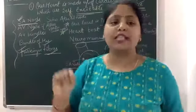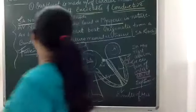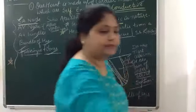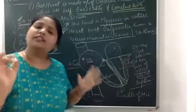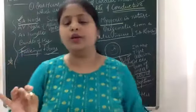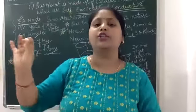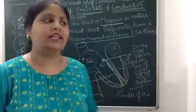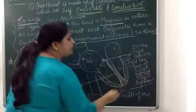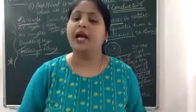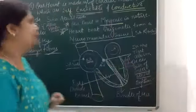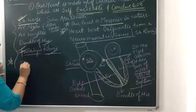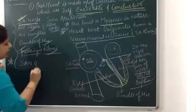The SA node can generate the maximum number of action potentials — that is 70 to 75 per minute. So to summarize: without any external stimuli, the nodal tissues are auto-excitable, but in a minute, the action potentials at different parts of the heart can differ. The maximum action potential is generated by the SA node.